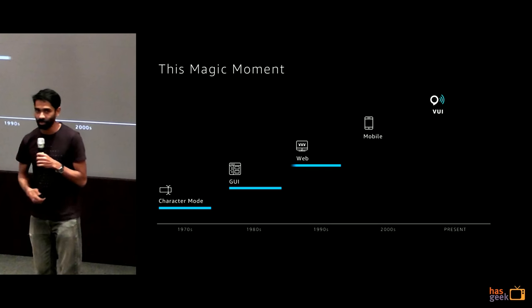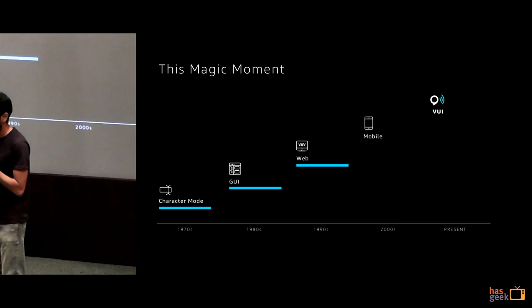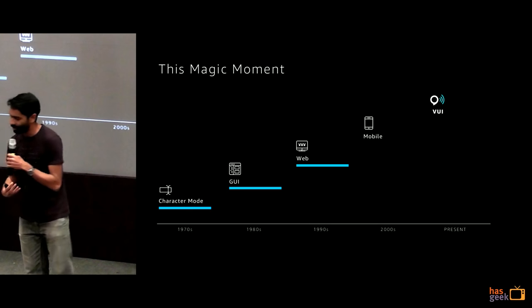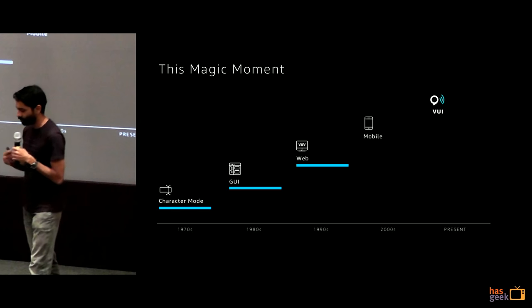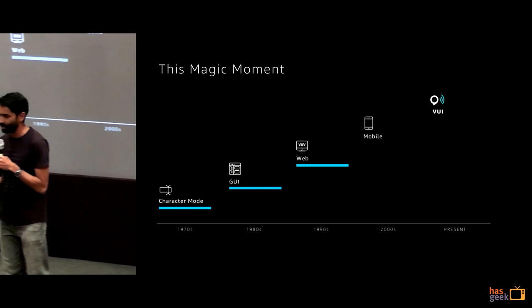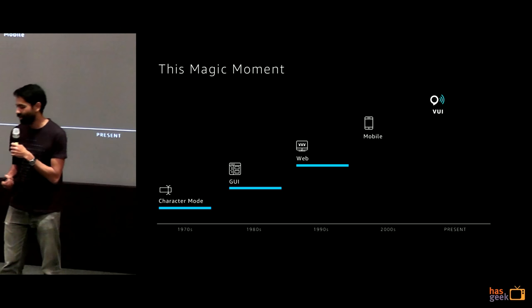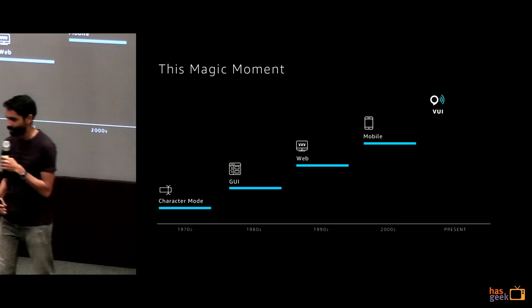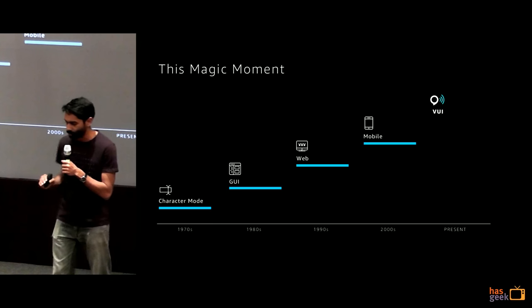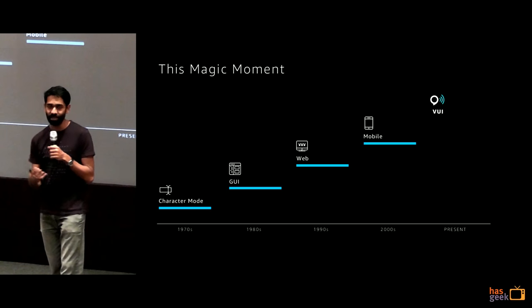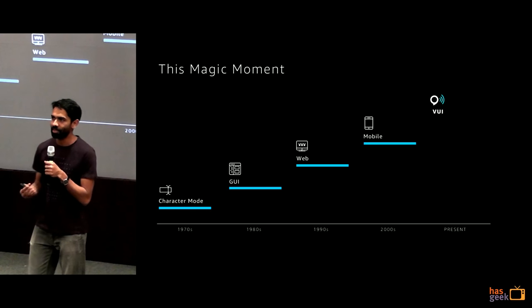In the mid-90s things changed to the era of the web, where you could get information at your fingertips by using a browser, and we were introduced to so many new UI elements and new ways to get information. In the mid-2000s came the era of mobile, where we went from basic phones with small screens and clunky keypads to the advanced smartphones we have today.